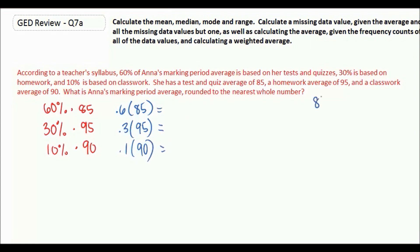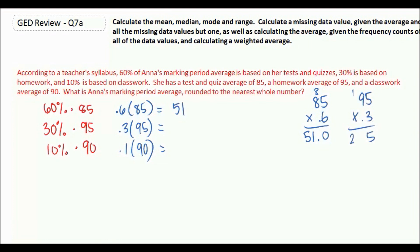So 85 times .6: 5 times 6 is 30, 8 times 6 is 48, plus 3 is 51. One decimal place, so the first part is 51. Then 95 times .3 gives you 28.5. And .1 times 90 is just going to be 9.